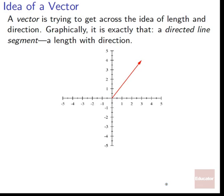The idea of a vector: a vector is just trying to get across the idea of length and direction. Graphically, it is a directed line segment — a length with direction. We're starting at the origin, and we've got this length here. The arrow at the end says that we're going in this direction. So we've got a chunk of length and we see which way it's pointed — it's pointed in a very specific direction with some angle to it.